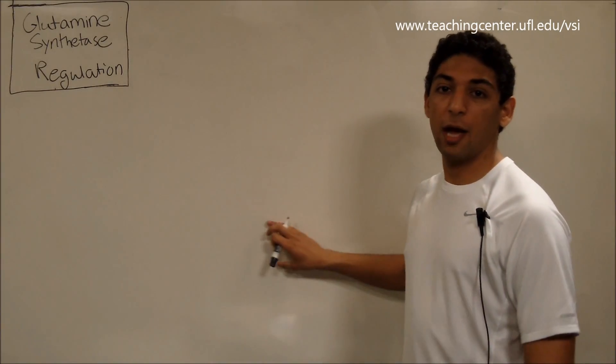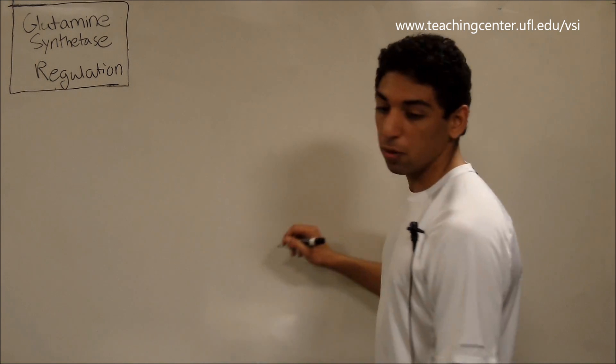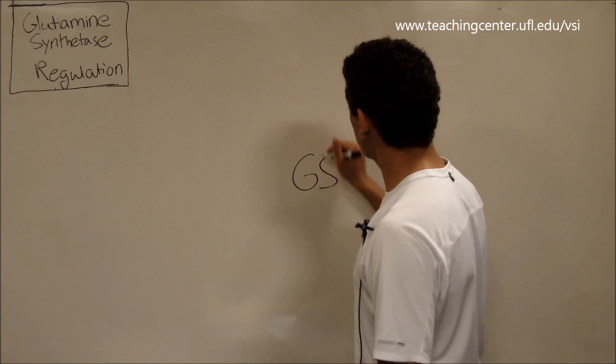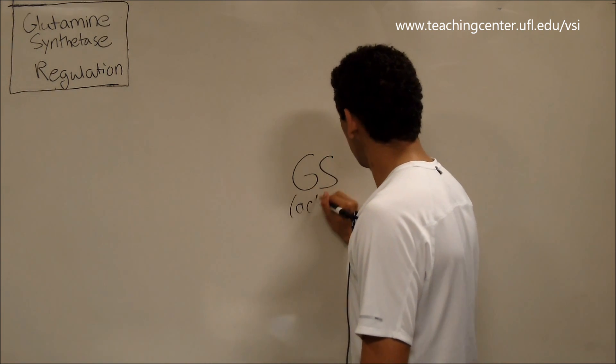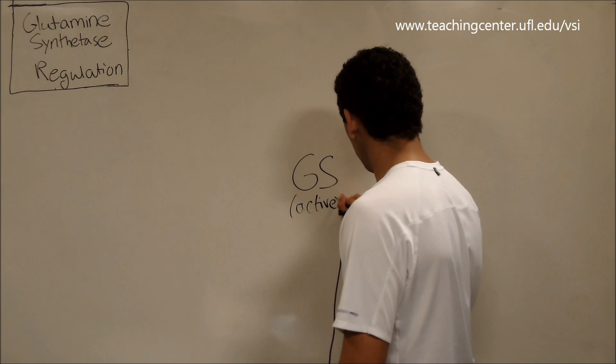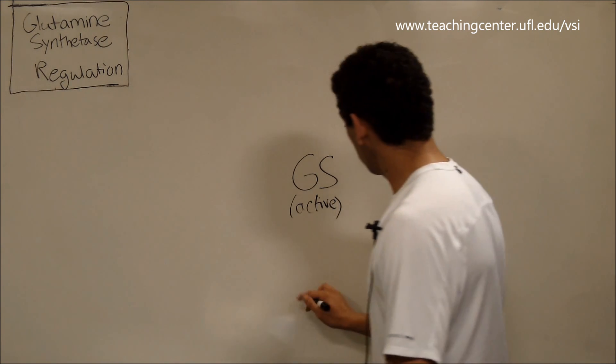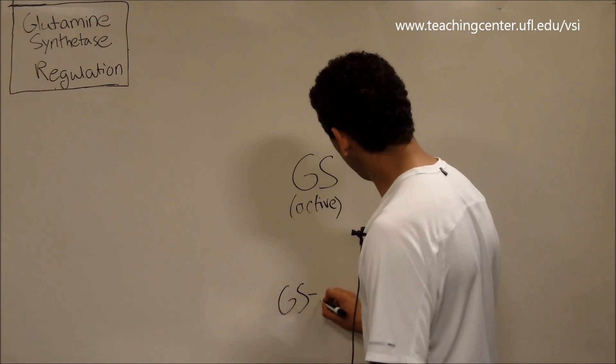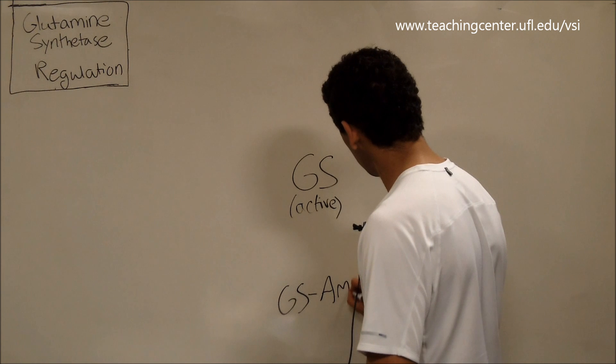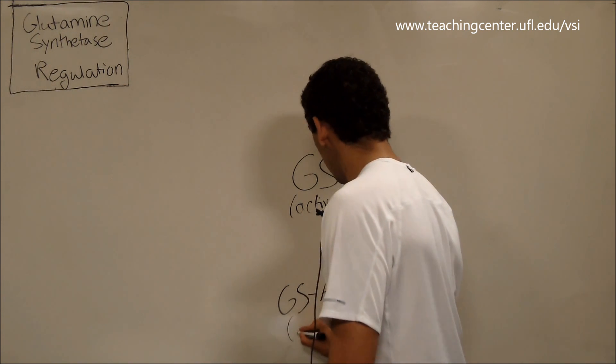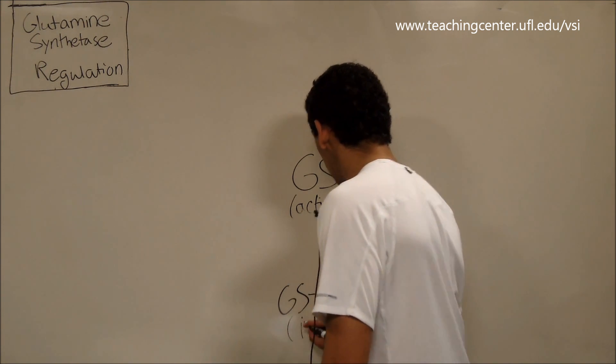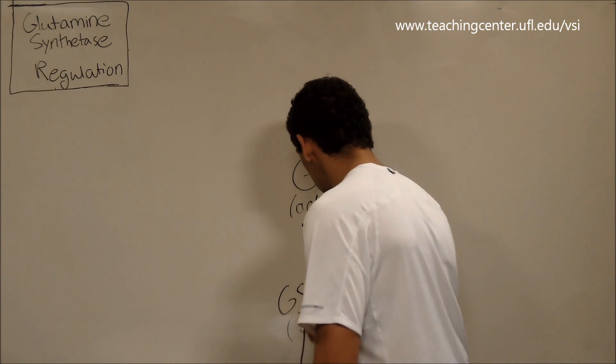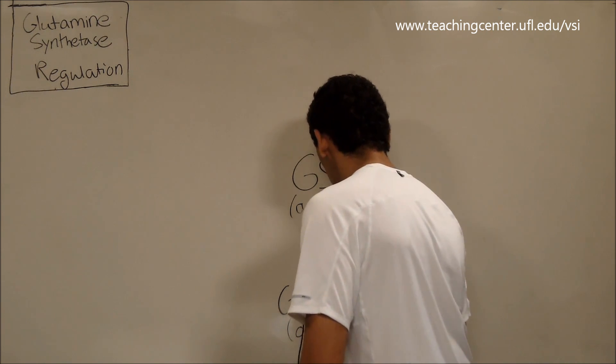So let's figure out how this enzyme's regulation actually works. So we have two forms of glutamine synthetase. We have regular old active glutamine synthetase, which is active on its own without anything attached to it. And then you have glutamine synthetase with an AMP attached to it. And this AMP makes the whole enzyme inactive. I'm just going to write off. This turns the enzyme off.